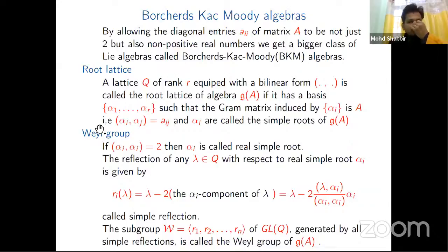Now we come to the Borcherds algebra. By allowing the diagonal entries a_ii of matrix A not just two but also non-positive real numbers, we get a bigger class of algebras—Borcherds class. Now we can associate to every algebra a lattice Q of rank r equipped with a bilinear form. For finite case, it's just the Killing form. It's called the root lattice of algebra g if it has a basis α_1, ..., α_r such that the Gram matrix induced by α_i represents the Cartan matrix.